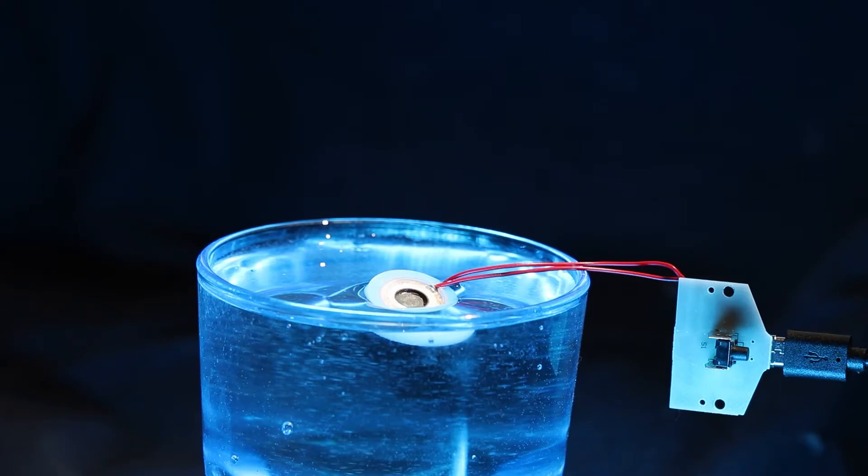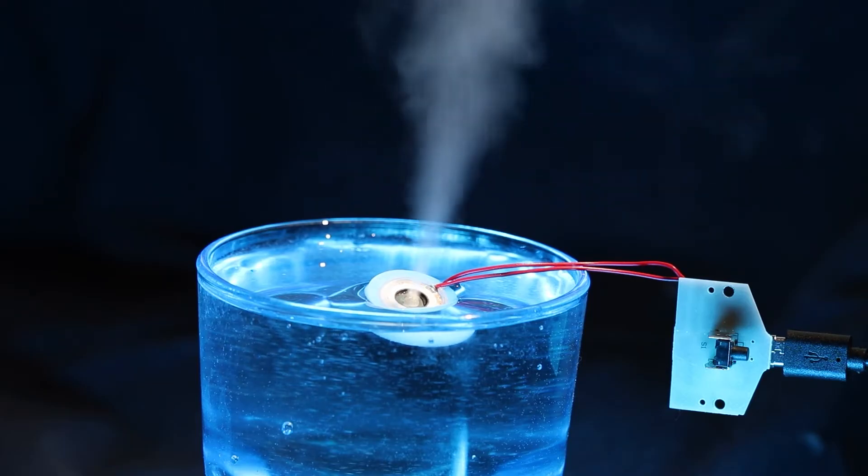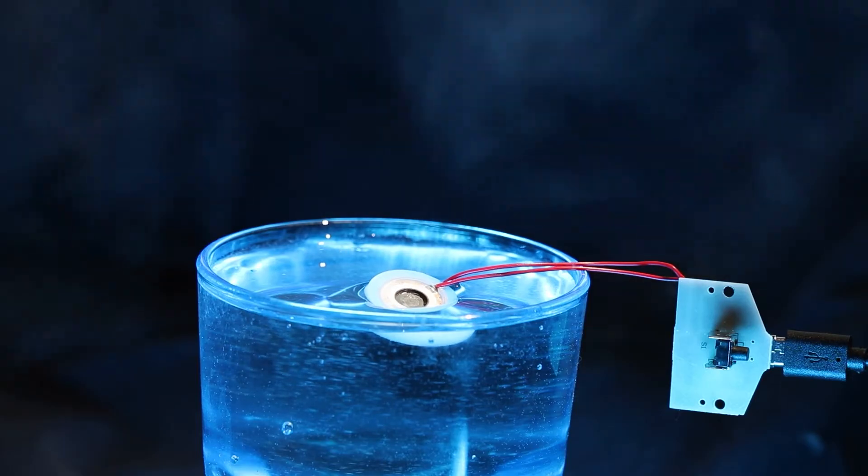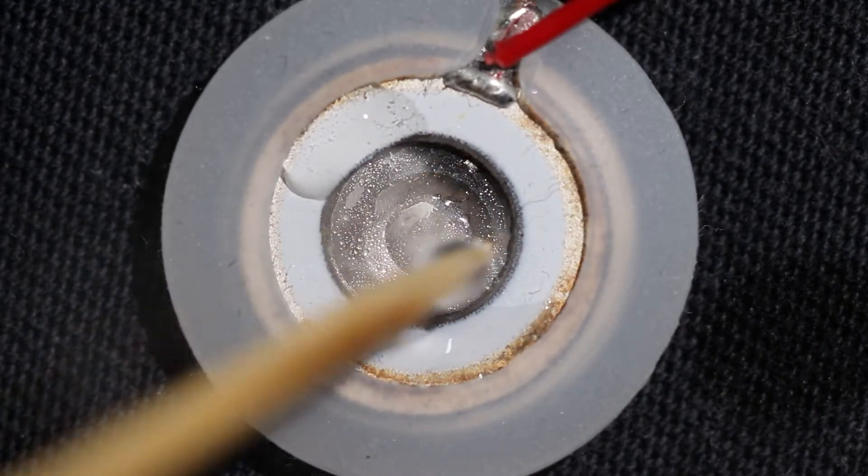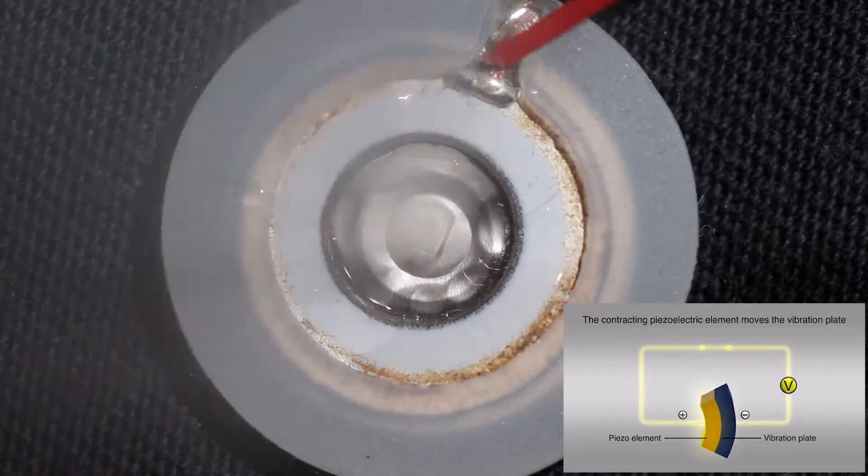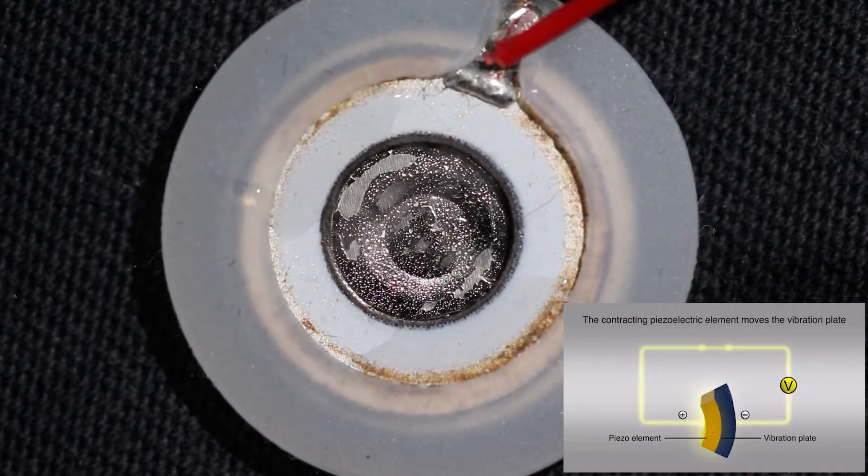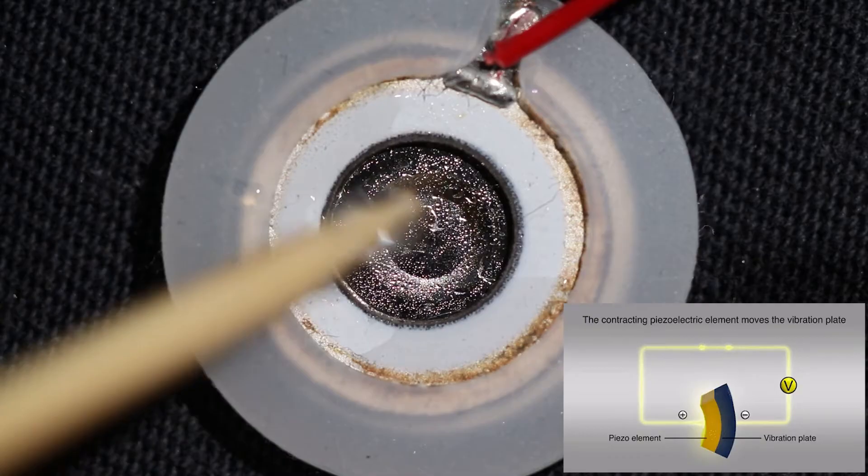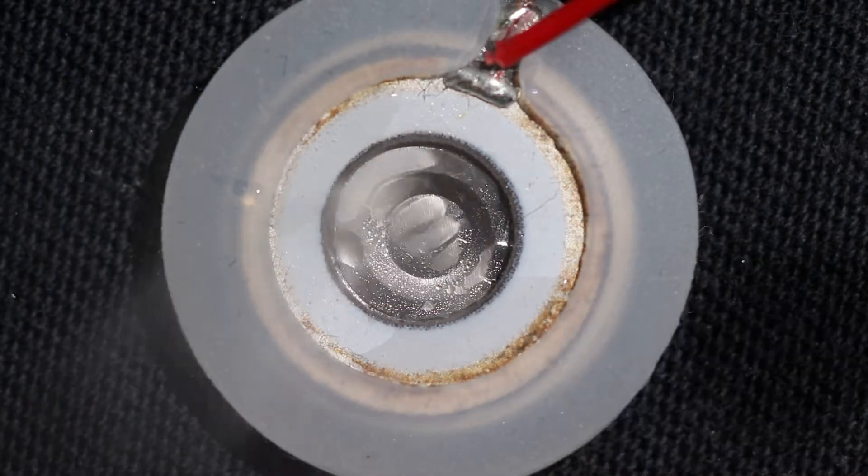So let's start with the element itself. Piezo element is created from a special material which can convert electrical energy into mechanical. For example, when voltage is applied to it, it deforms. It changes its dimensions. Even if it's really hard to notice, because deformation is really slight, it is enough to make a lot of cool stuff with its help.